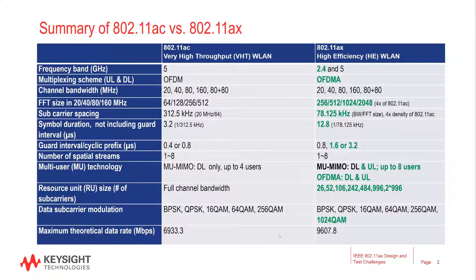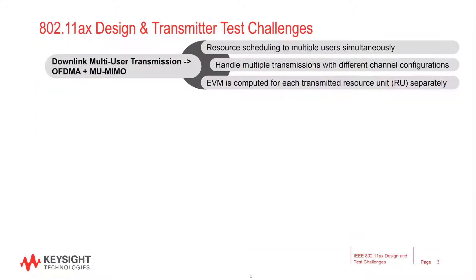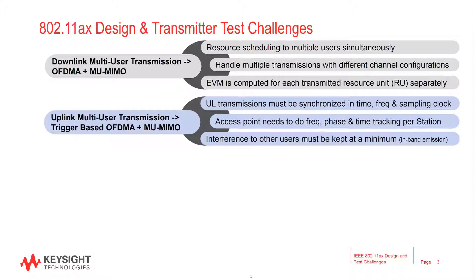Let's take a look at these new challenges. In the downlink multi-user transmission, the access point needs to serve multiple users simultaneously, and oftentimes each user will have different channel configurations, including different modulation formats as well as spatial streams. The standard also calls for the EVM to be computed for each transmitted resource unit separately. When testing, you want to verify the packets for the different users are scheduled and transmitted correctly, and the EVM for each resource unit is computed correctly and meets the EVM requirements.